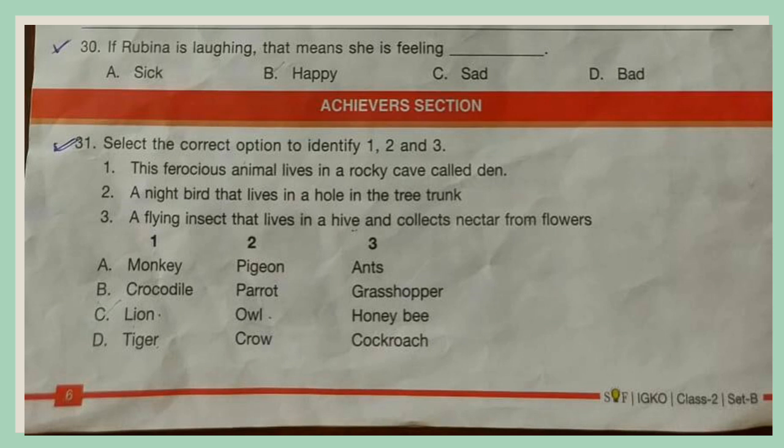Question 30. If Rubina is laughing, that means she is feeling: A. Sick, B. Happy, C. Sad, D. Bad.